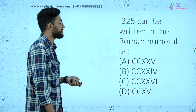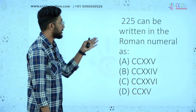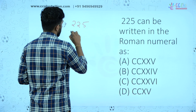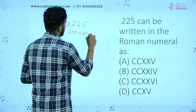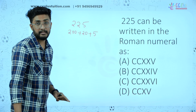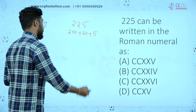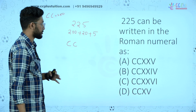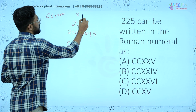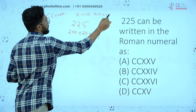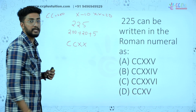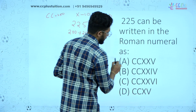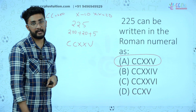Next question: 225 can be written in Roman numeral. 225 is 200 plus 20 plus 5. C is 100, so 200 is CC. 20 is XX (2X). 5 is V. So we call it CC, XX, V — which is CCXXV. That is the answer.